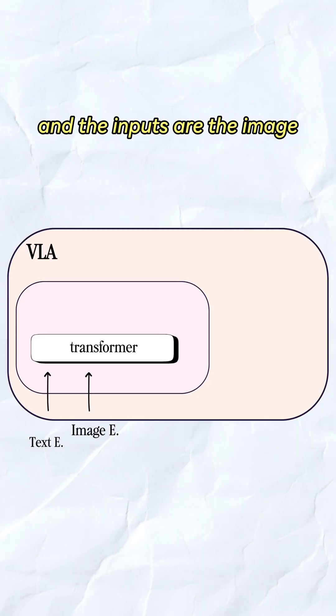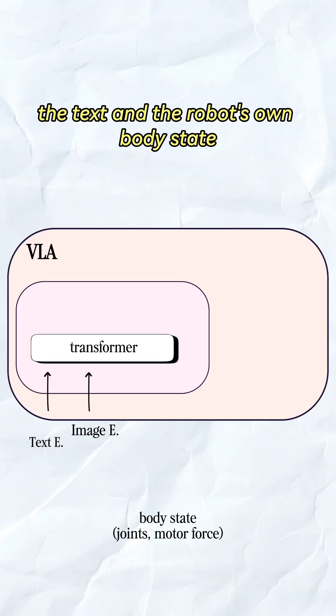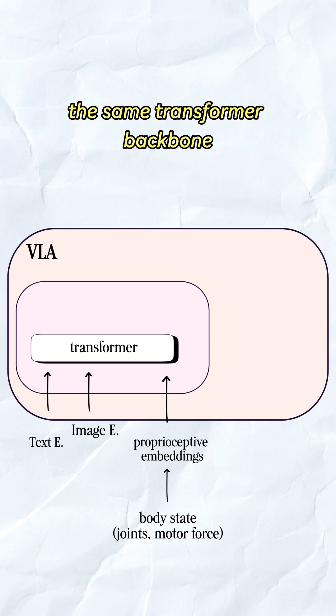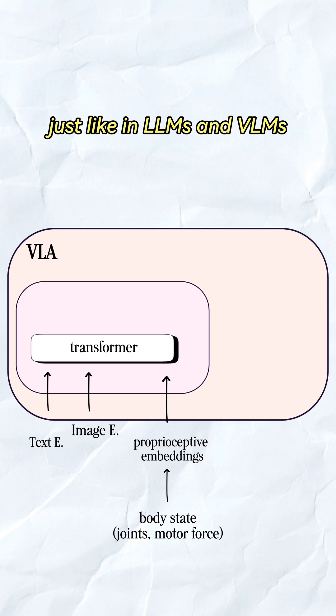And the inputs are the image, the text, and the robot's own body state. All of these become embeddings and get processed by the same transformer backbone, just like in LLMs and VLMs.